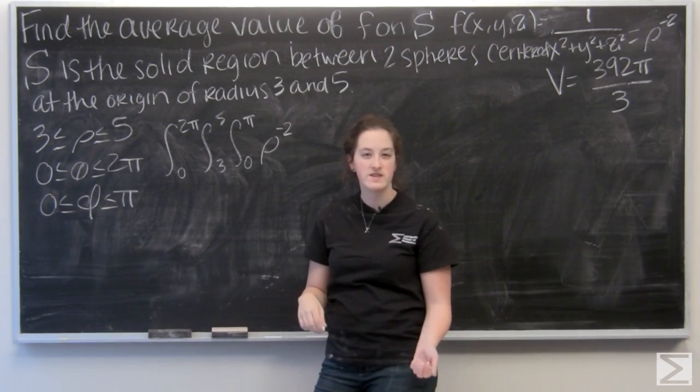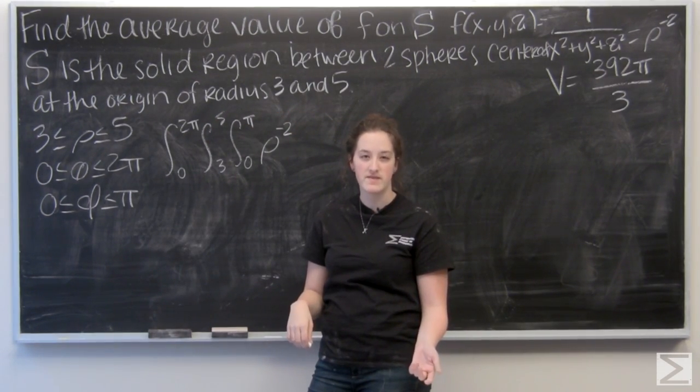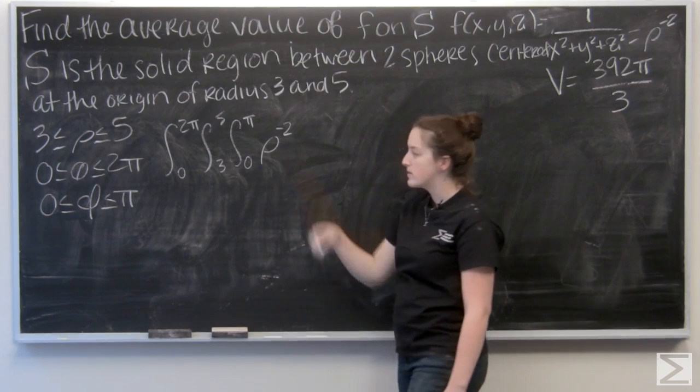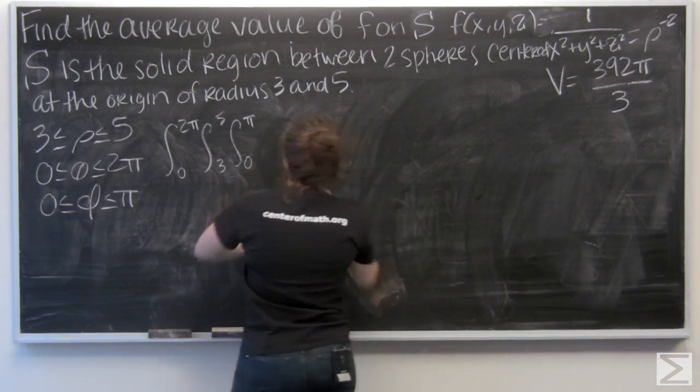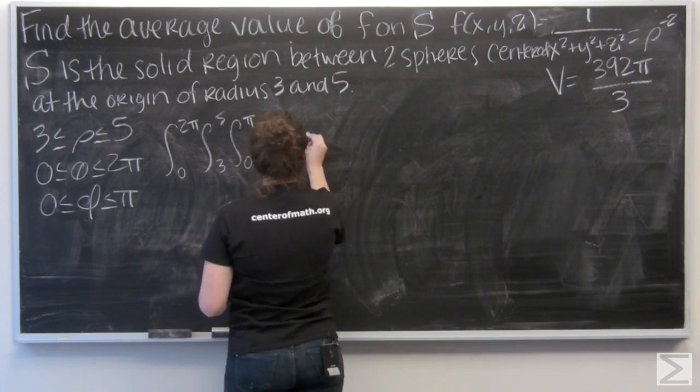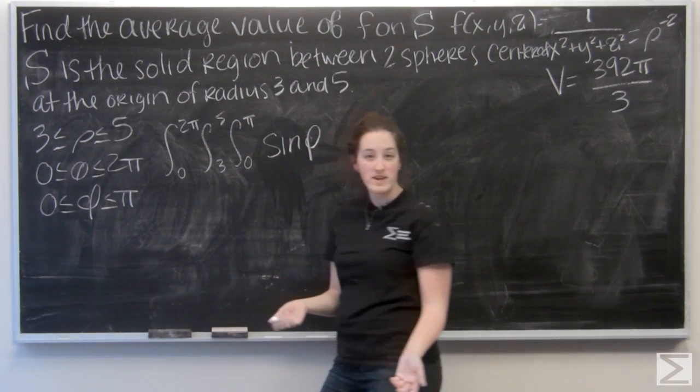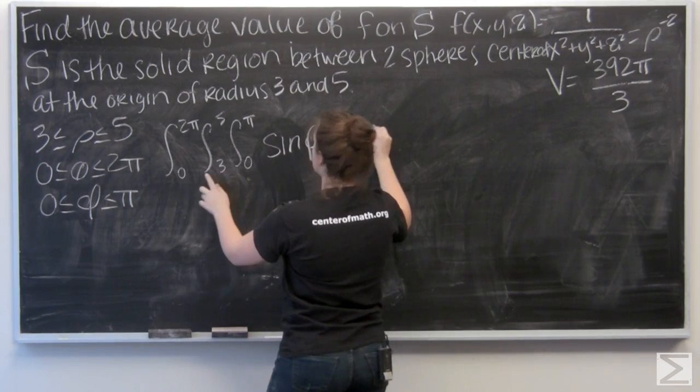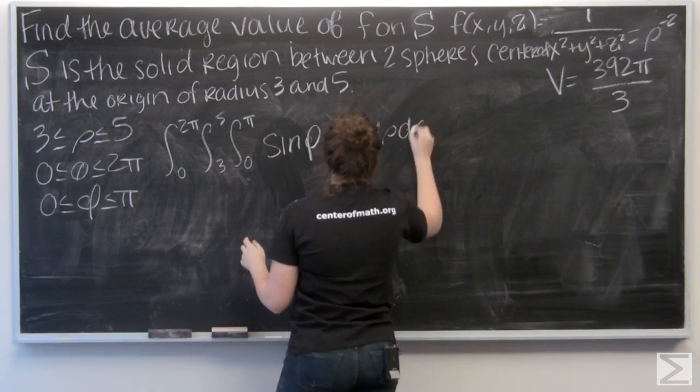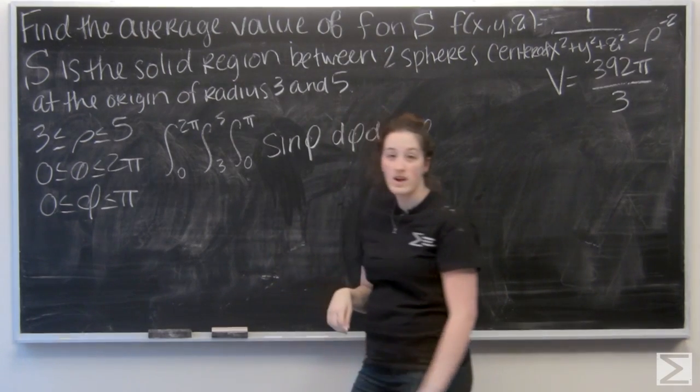And then remember dv in spherical coordinates is rho squared sine phi. So when I multiply that by my rho to the negative 2, my rho's are going to cancel out. And the only thing I'm going to be integrating is sine phi, d phi, d rho, d theta.